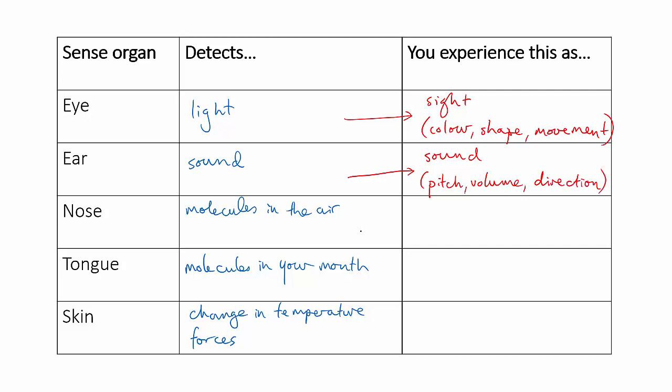The nerve signals from your nose become the sensation of smell, and that from your taste buds becomes taste. And the nerve signals from your skin become touch, and the sensation of hot or cold.